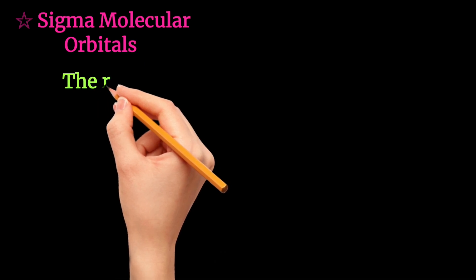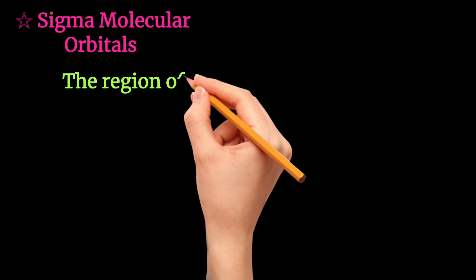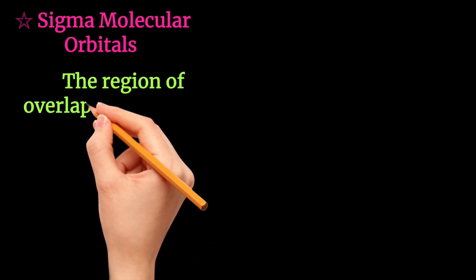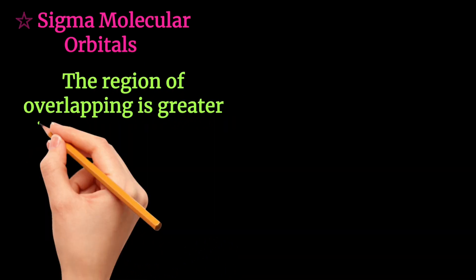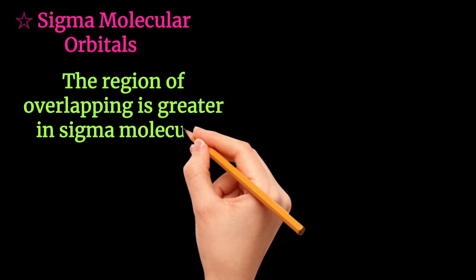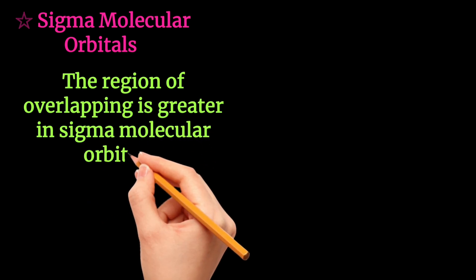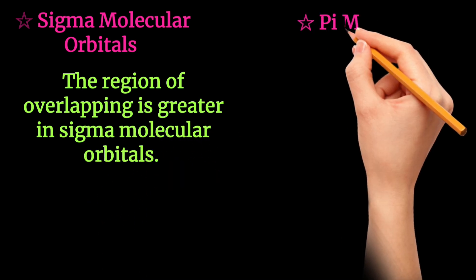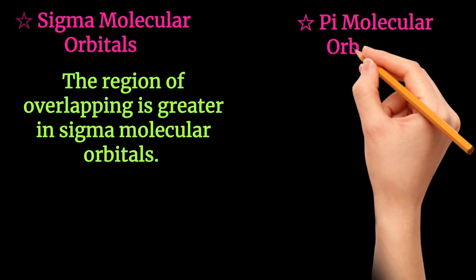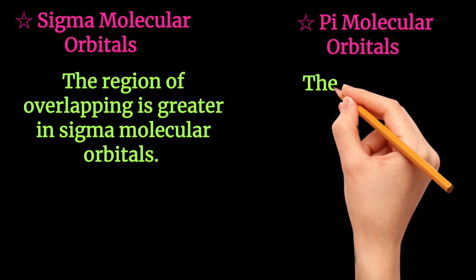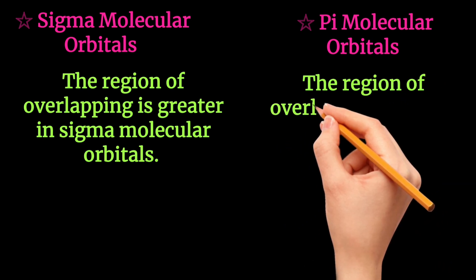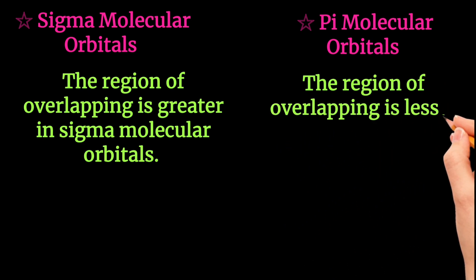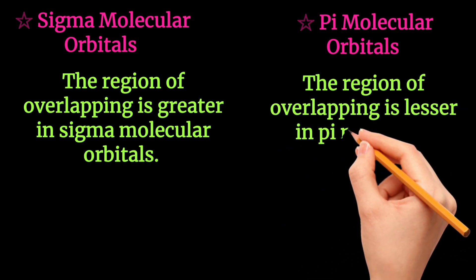Next point of difference: the region of overlapping is greater in a sigma molecular orbital, while the region of overlapping is less in pi molecular orbitals.